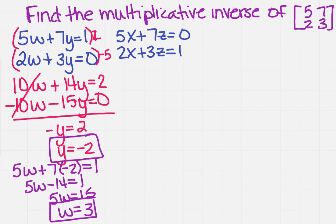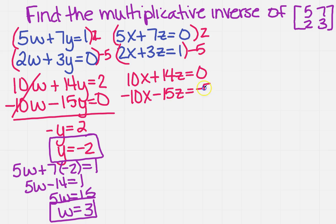Now I need to do the same thing that I did over here on the right. So now this time I think I want to get rid of X, so I'm going to multiply this by 2, and then I'm going to multiply this one by minus 5. So that's going to give me 10X plus 14Z equals 0. And I'm going to get minus 10X minus 15Z equals minus 5.